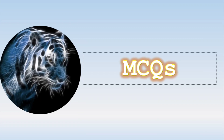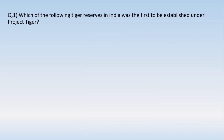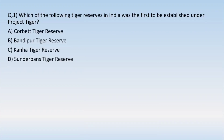Now let's discuss a few MCQs related to this topic. The very first one: which of the following tiger reserves in India was the first to be established under Project Tiger? Options are: (A) Corbett Tiger Reserve, (B) Bandipur Tiger Reserve, (C) Kanha Tiger Reserve, or (D) Sundarbans Tiger Reserve. The correct answer is Option A — Corbett Tiger Reserve, which is located in the state of Uttarakhand.